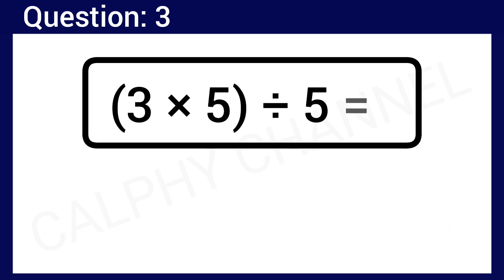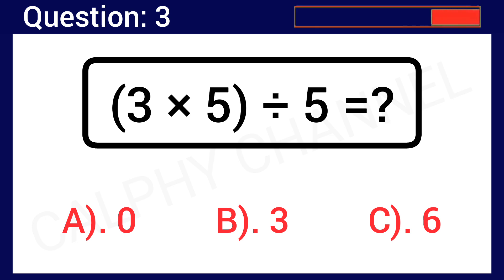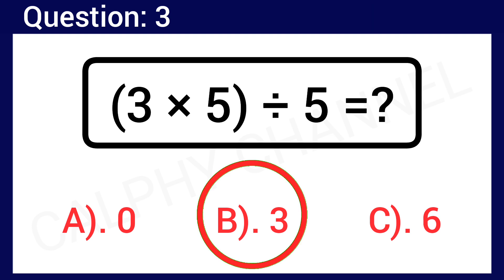Question number 3: 3 times 5 in the bracket divided by 5 is worth what? Drop your answer in the comment section below. Option A: 0, Option B: 3, Option C: 6. The correct answer is Option B, which is 3.